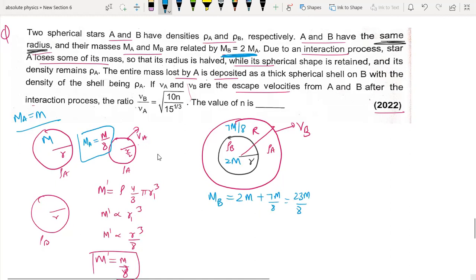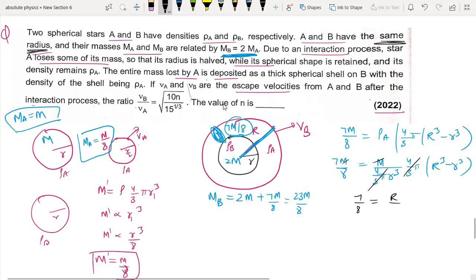So 7m/8 equal to density into volume. Volume is equal to 4/3 π (R³ - r³). I will put m over 4/3 π r³. So 4/3 π into R³ - r³ equal to 7m/8.